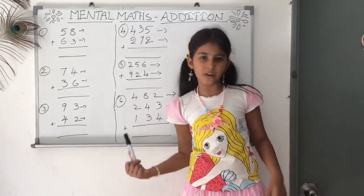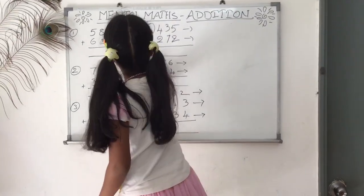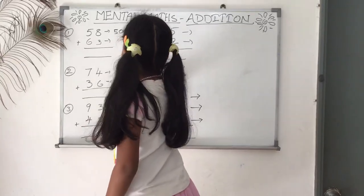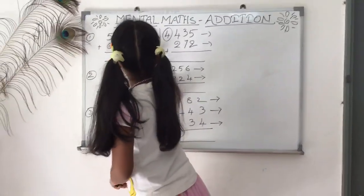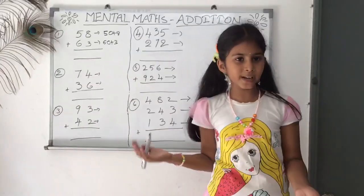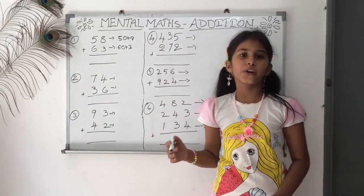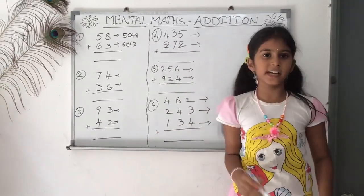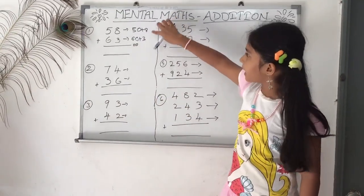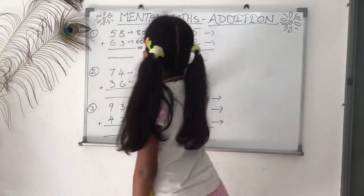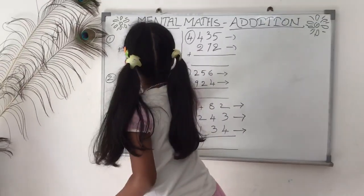So let's start our first question. 58 is nothing but 50 plus 8. Similarly, 63 is nothing but 60 plus 3. So the second step we need to do is add 50 plus 60, we get 110. Now if we add 8 plus 3, we get 11. So 110 plus 11, we get 121.